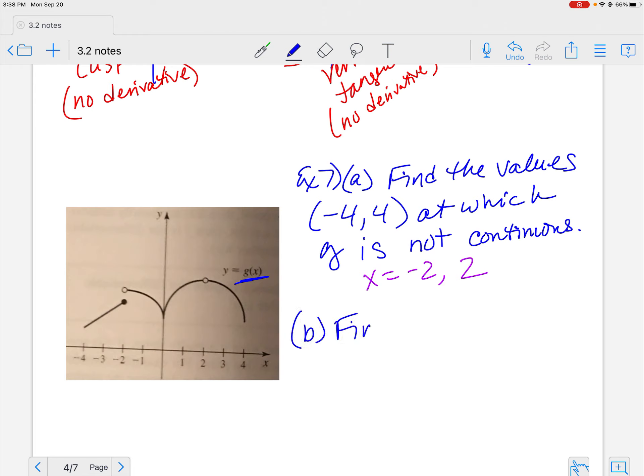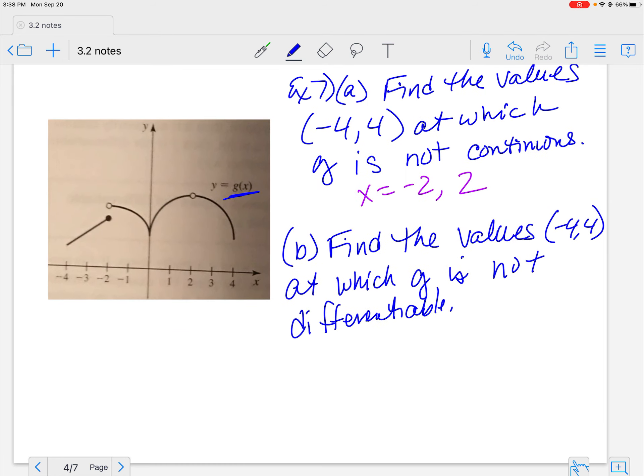Now, find the values in my same interval from negative four to four at which G is not differentiable. So where else? Yeah, so still not differentiable here, right? Because you can't have a differentiable at the jumping. Yep, again, not continuous here. Good, so at two.